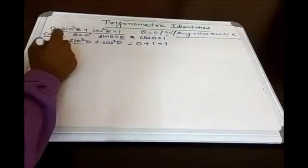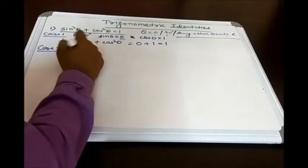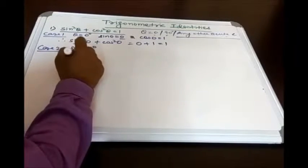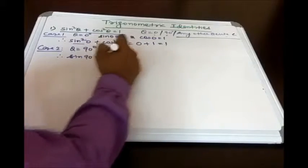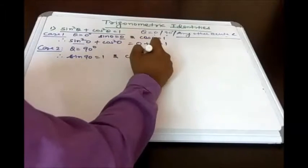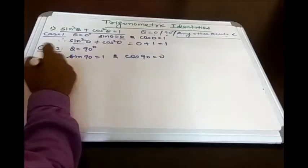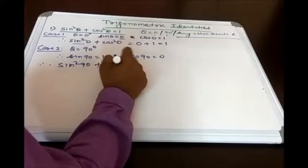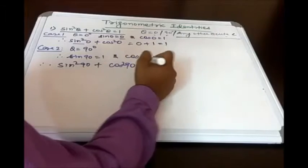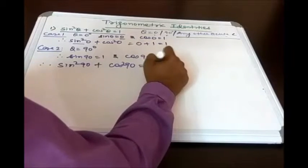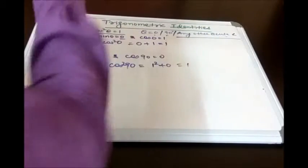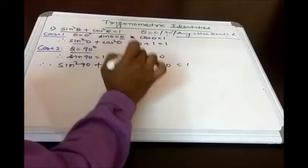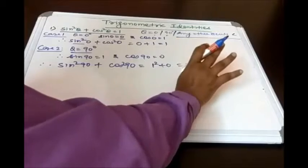0° and 90° cannot be handled through a right-angle triangle, so we use specific values. Now for Case 2, when θ = 90°: sin 90° = 1 and cos 90° = 0. Therefore sin²90° + cos²90° = 1² + 0 = 1. So even for θ = 90°, sin²θ + cos²θ = 1 holds true.